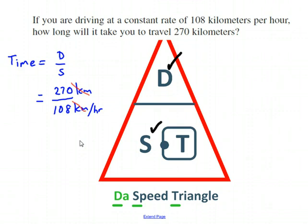Cancel out where you can, so those kilometers cancel out, and you're just left with hours, which is a unit for time. Just put this into your calculator. 270 divided by 108 is 2.5, and it's going to take you 2.5 hours to drive that distance.